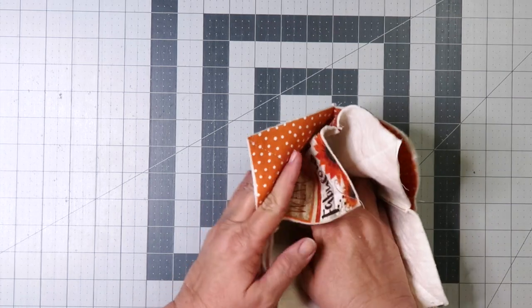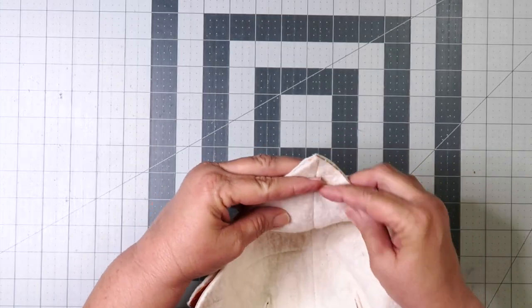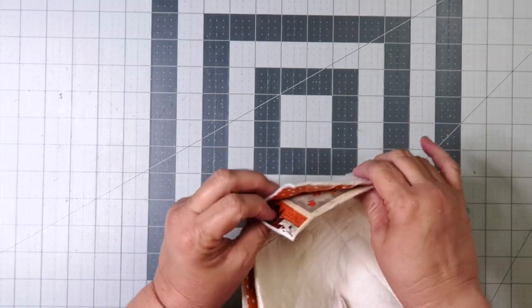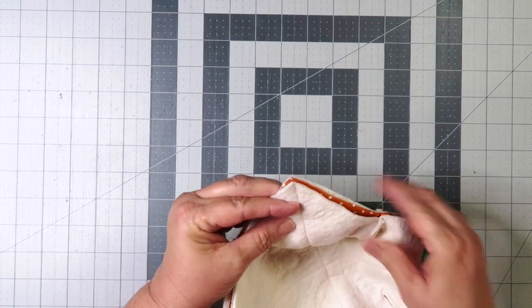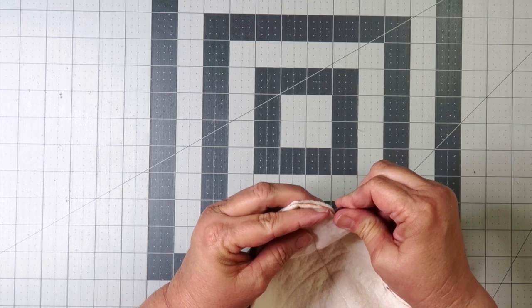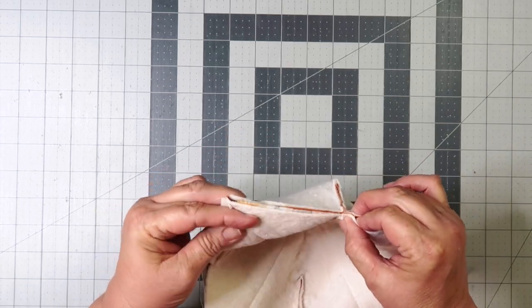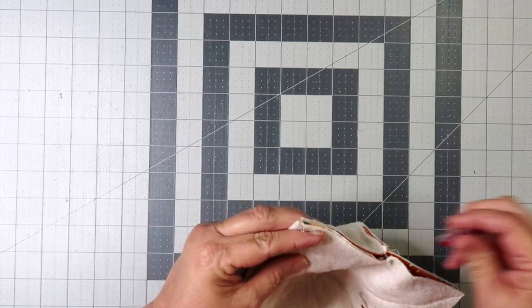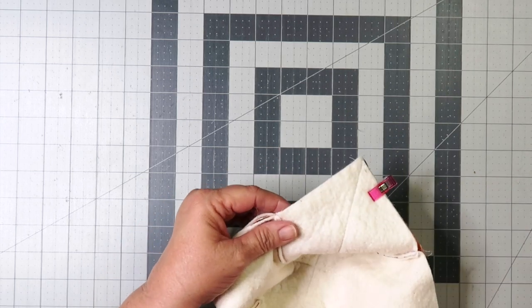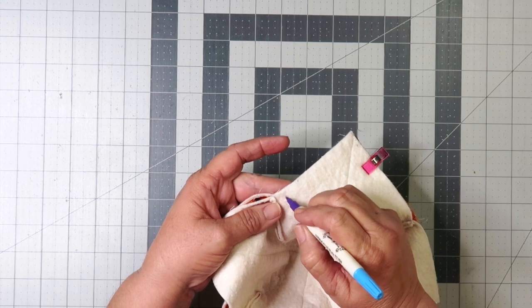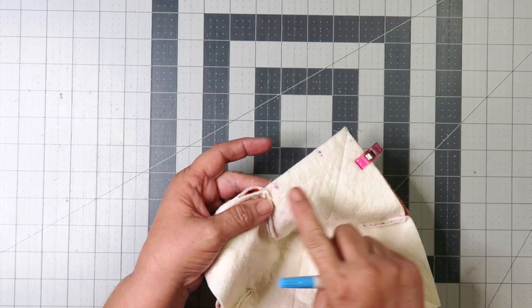And now with right sides together, match up your seams and pin or clip. And now mark approximately 2 to 3 inches. And that's where we're not going to sew, so we can turn it right side out.